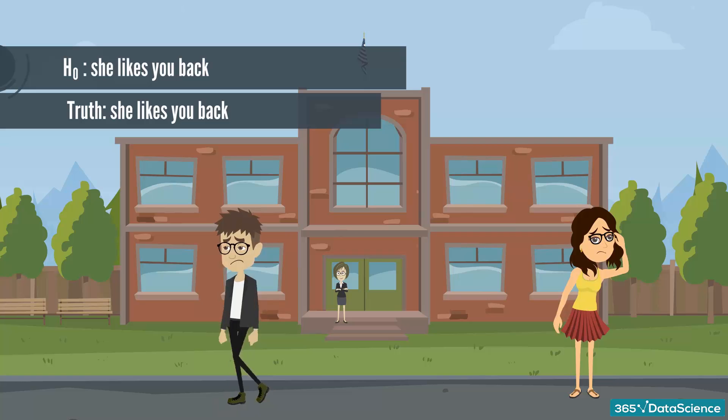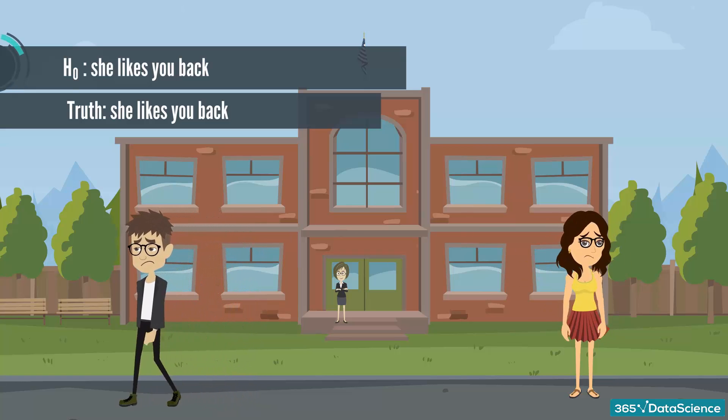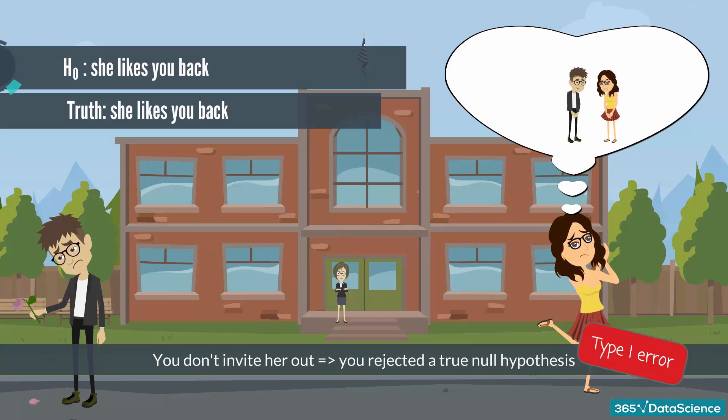Unfortunately, you did not invite her out because after testing the situation, you wrongly thought the null hypothesis was false. In other words, you rejected a true null hypothesis and lost your chance. It is a very serious problem because you could have been made for each other, but you didn't even try.